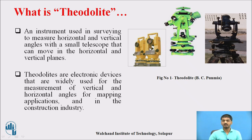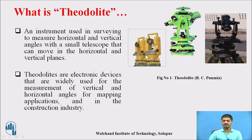Similarly, for the digital theodolite — this is the vernier theodolite and this is the digital theodolite. Theodolites are electronic devices widely used for the measurement of vertical and horizontal angles. The purpose is the same for both instruments: identifying vertical and horizontal angles — using vernier readings for one, and digital readings for the other.